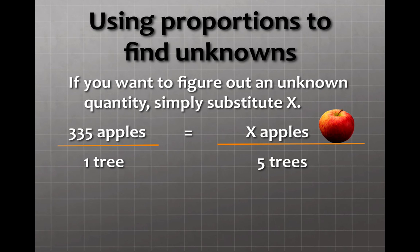You can use proportions to find unknowns. This is a big power of it. If you want to figure out an unknown, simply substitute a variable. In this video, I'll be using the variable x, which is pretty much the standard for algebra. Say you're a farmer. You have five apple trees of this variety, and you want to know how many boxes you're going to need to buy to hold all the apples in. If there's an average of 335 apples on one tree, how many apples can you expect on your five trees?